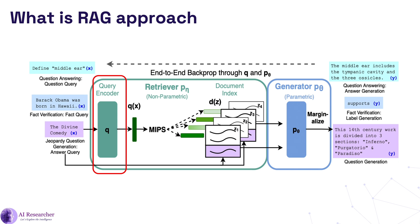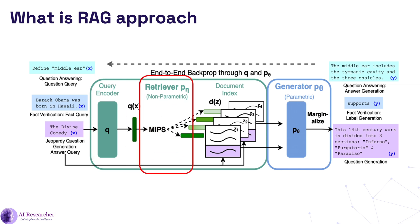For example, queries like 'define middle ear' and 'Barack Obama was born in Hawaii' are transformed into vector embeddings. Next comes the retriever or document retrieval. It uses the encoded query to retrieve relevant documents from a pre-built document index using a method called Maximum Inner Product Search (MIPS). This method effectively searches for the top-k document embeddings that have the highest dot product with the query vector, indicating relevance. The output would be the top-k documents denoted as z1, z2, z3, z4, retrieved based on their relevance to the query vector.